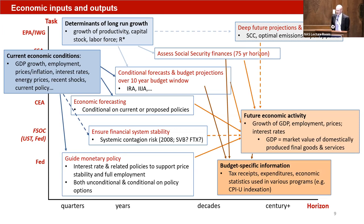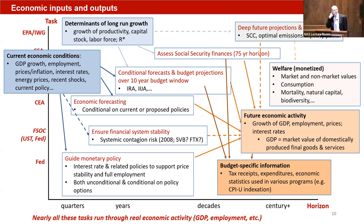There's going to be budget-specific information coming out of these different models: tax receipts, expenditures, and various economic statistics. The Troika apparently has to forecast around 41 different variables for input into actual budget calculations because they're all indexed in different ways. I'll make a note that this focus on GDP and real economic activity is the bread and butter for macroeconomists, but GDP — the market value of domestically produced final goods and services — does not incorporate a whole ton of things that we actually care about.